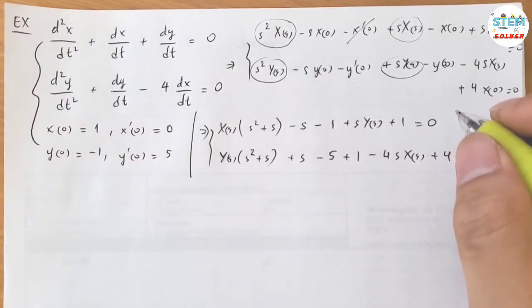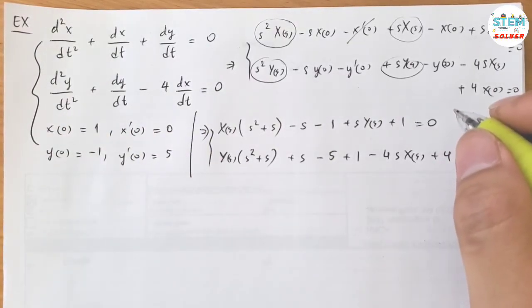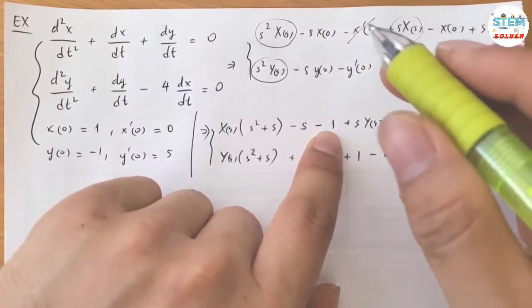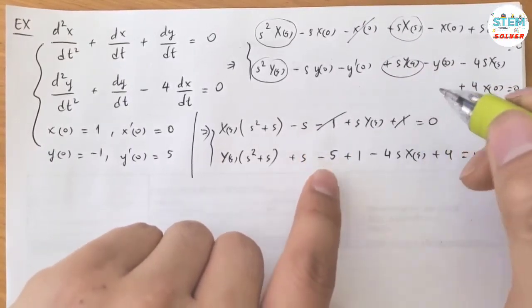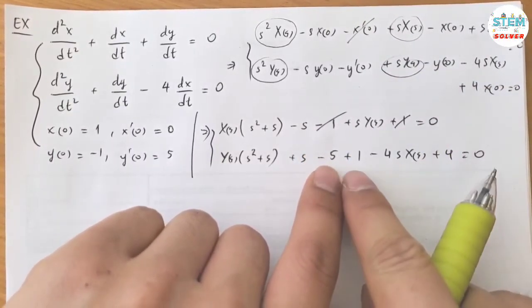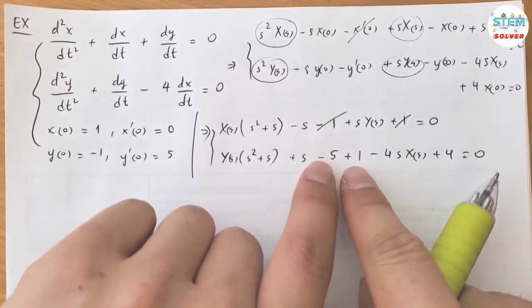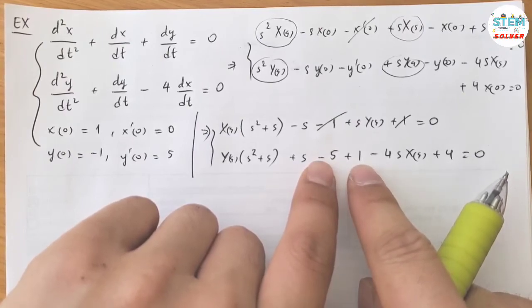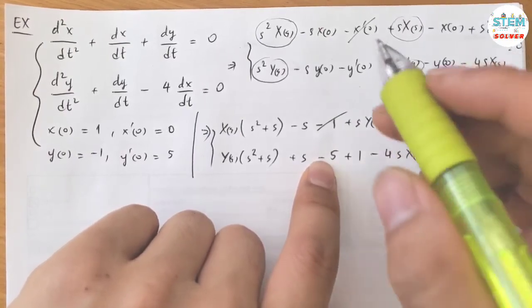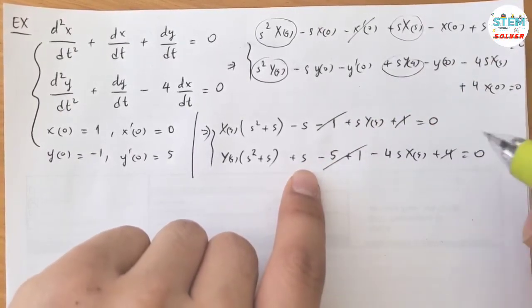y of 0 equals negative 1 plus 1 minus 4 X of s plus 5 equals 0. Positive 1, negative 1, negative 1 — gone. Negative 5 plus 1 is negative 4, positive 4 — gone.